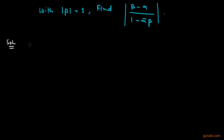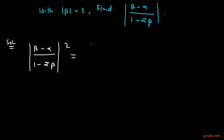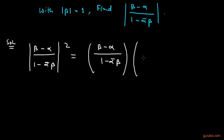We shall apply the result that the square of mod of (beta minus alpha) over (1 minus alpha-bar into beta), which equals (beta minus alpha) over (1 minus alpha-bar beta) multiplied by the conjugate of the whole value, i.e., conjugate of (beta minus alpha) over (1 minus alpha conjugate into beta).